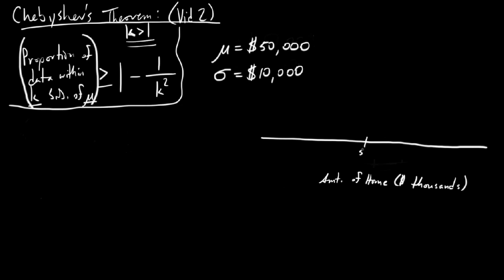So $50,000 is the average home price with a standard deviation of $10,000. Adding $10,000 to $50,000 puts us at $60,000 for one standard deviation above; $70,000 for two; and $80,000 for three. On the other side: $40,000, $30,000, and $20,000 — and we can put in the number of standard deviations below as well.